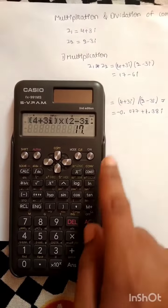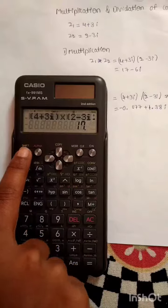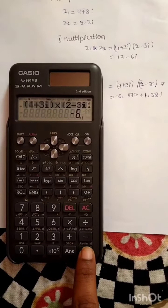The real part is 17. To find the imaginary part, shift equals button is minus 6i.